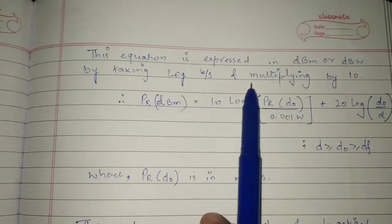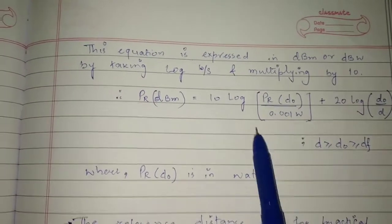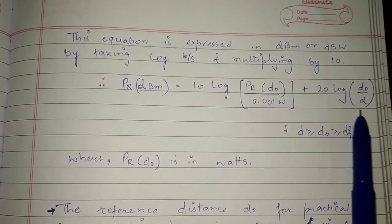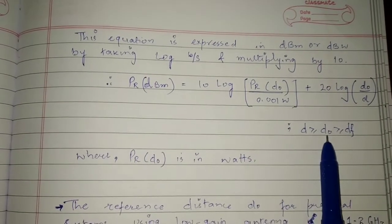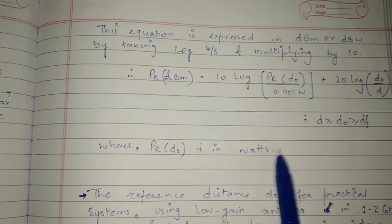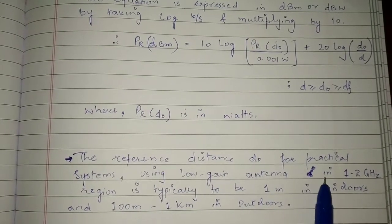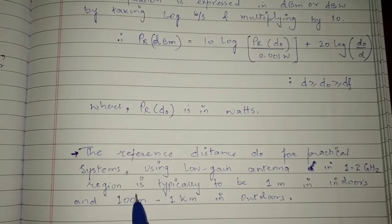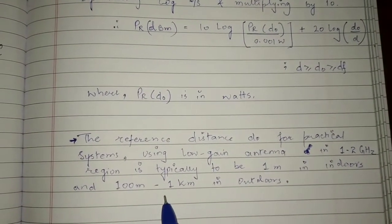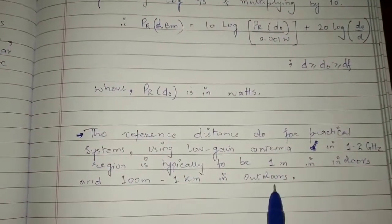This equation is expressed in dBm by taking log of both sides and multiplying by 10: PR(dBm) = 10 log[PR(D₀) / 0.001 W] + 20 log(D₀/D), where D ≥ D₀ ≥ DF and PR(D₀) is in watts. The reference distance D₀ for practical systems using low-gain antennas in the 1–2 GHz region is typically 1 meter indoors and 100 meters to 1 kilometer outdoors.